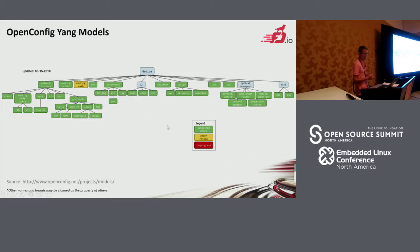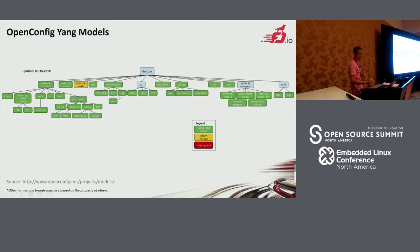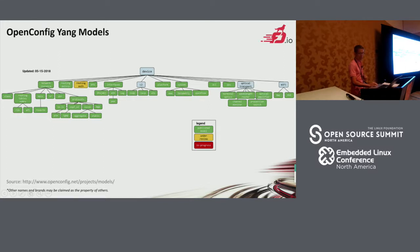This is a picture of what they have defined so far. They define network instances such as routing, MPLS, and service routing. For interfaces, they also support Ethernet, IP, and IP-over-Ethernet. They also define some YANG models for the platform, such as CPU fans and other platform YANG models. Additionally, they define ACL, QoS, and for Wi-Fi and optical transport, they also define YANG models.